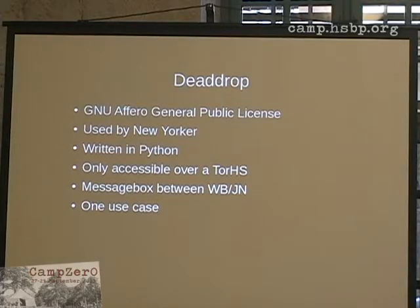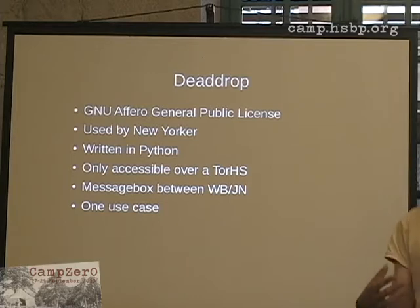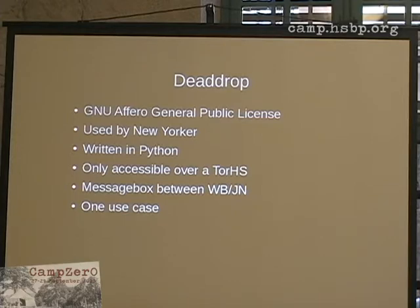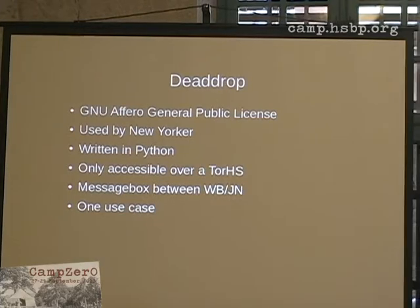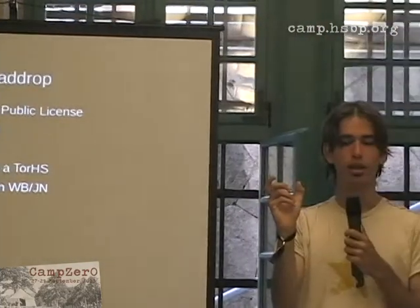It's only accessible on Tor hidden servers. And there's a message box between the whistleblower and the journalist, so when the whistleblower uploads material, they get a small number which they can type in again when they come back — when the journalist or the whistleblower leaves a message, so they can have a back and forth when the journalist doesn't really understand the material well.